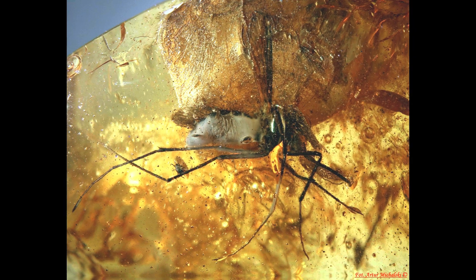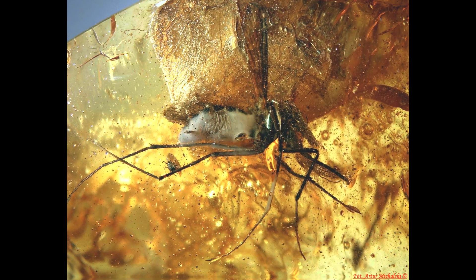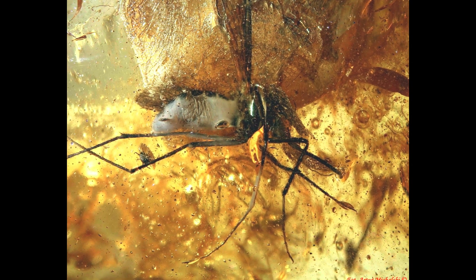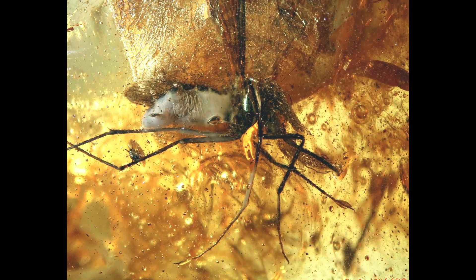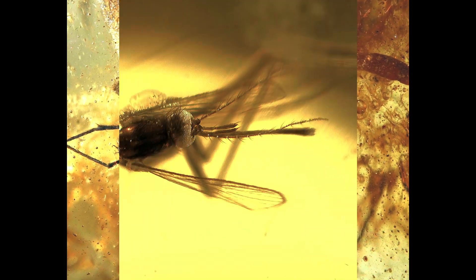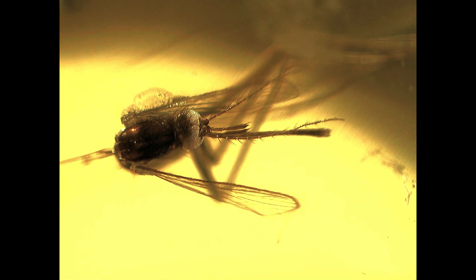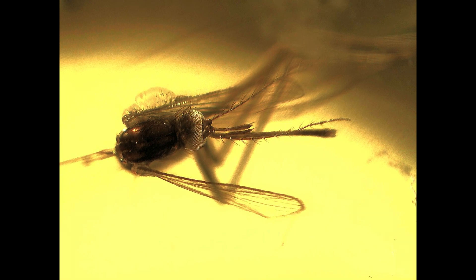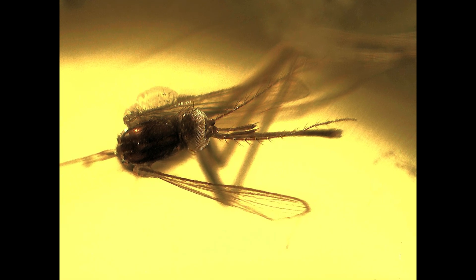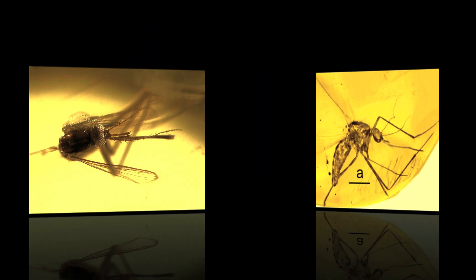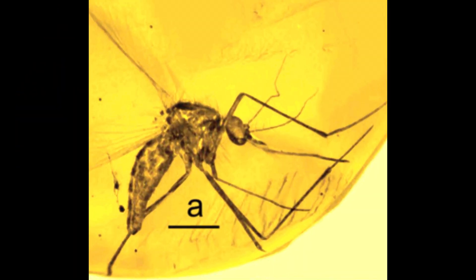Combined with Baltic amber from the Eocene and Dominican amber, there are just 25 fossil species recognized in total. Part of the reason why mosquitoes are rare in amber is because they feed mostly on vertebrates and are not attracted to tree resin where they could get trapped.